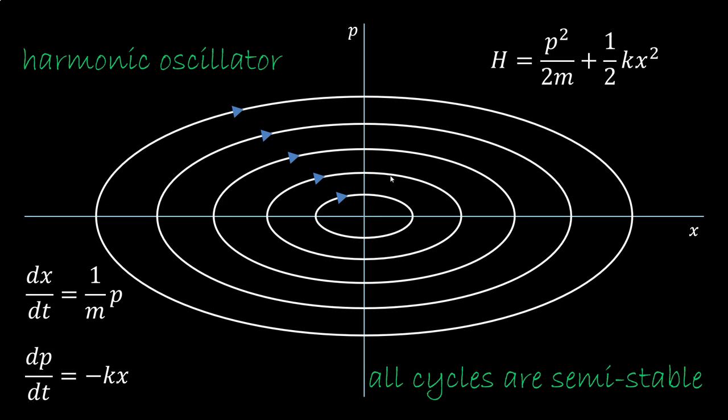All ellipses are fixed regions. The movement remains within each ellipse. But they are not stable nor unstable. The trajectories do not come closer nor go further. They are semi-stable. If you make a small variation, you just end up in a different equilibrium.